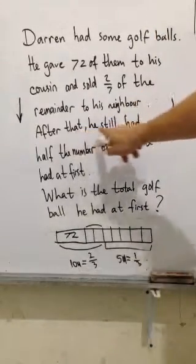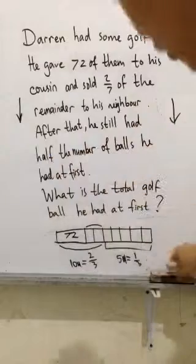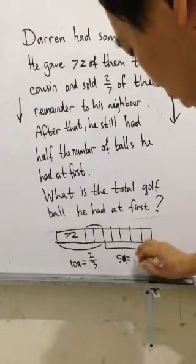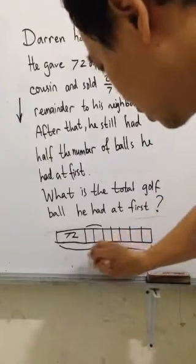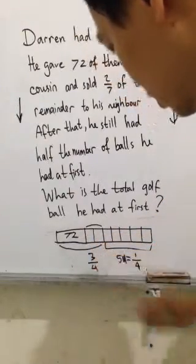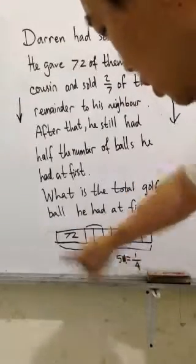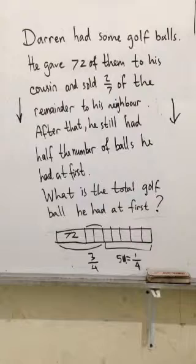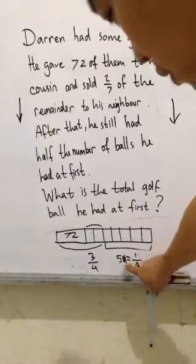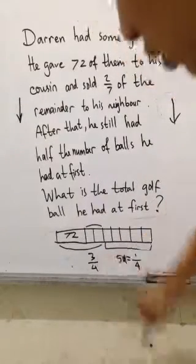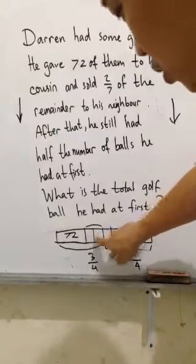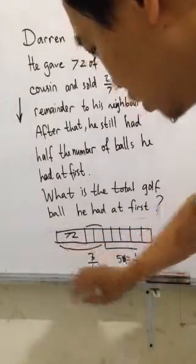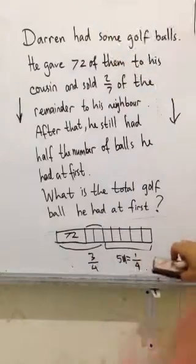Again, for example, if after that he still had a quarter — so that means these 5 units here represent 1 quarter. So that means the other part is 3 quarters. If 1 quarter is 5 units, so 3 quarters is 15 units — remember that. So because this section is 2 units, that means 72 equals 13 units. I just want to test you — do you understand the concept of whole numbers and fractions?